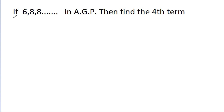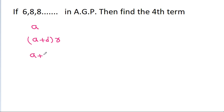In this video, we have been given that 6, 8, 8 are in AGP, and we have to find the fourth term. AGP is a combination of AP and GP, so the terms in AGP are A, (A + D)·R, (A + 2D)·R², (A + 3D)·R³, and so on.